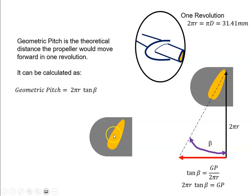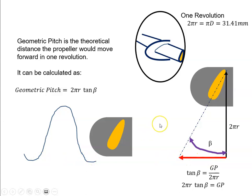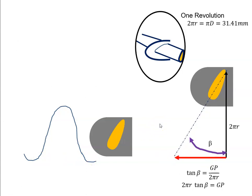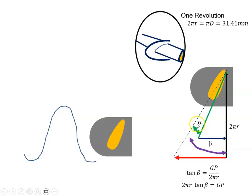So if we have a propeller blade as it rotates, it's going to move forward in that sort of helical shape, and that distance is our geometric pitch — which relates to this red line here. But we know that the aircraft doesn't actually go forward at that distance, because when the propeller is rotating the aircraft has moved forward at this velocity — this distance, if you like. And that gives us a relative airflow, and we get an angle of attack between the blade chord line and the relative airflow.